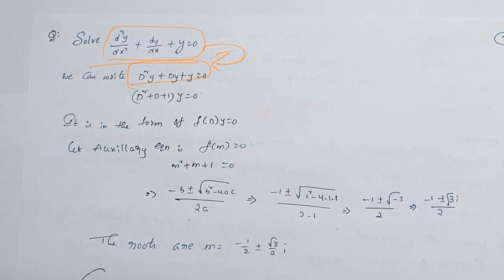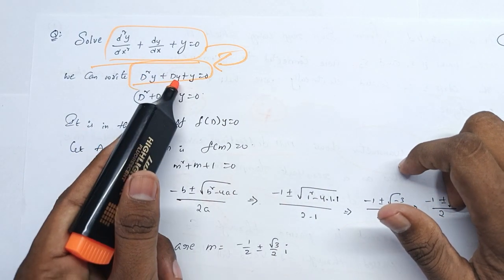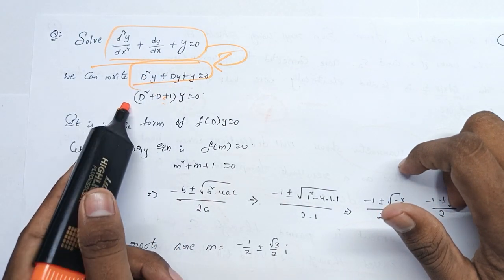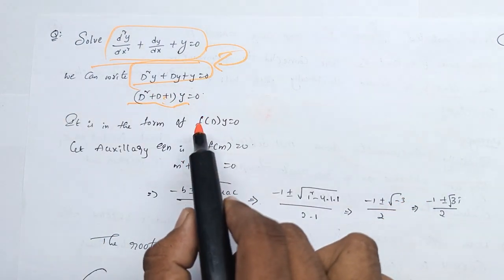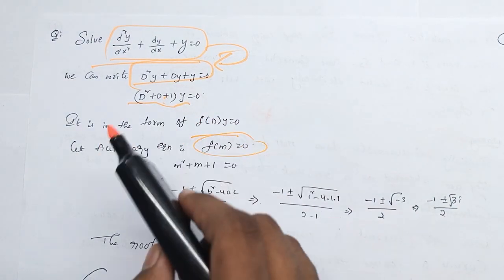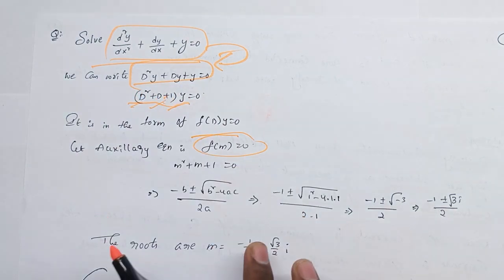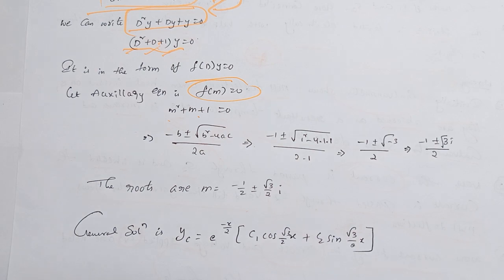So you can write d²y/dx² + dy/dx + y = 0. If you have the auxiliary equation, you have to find where f(m) is equal to 0. An auxiliary equation this is f(m) = 0, which is m² + m + 1 = 0. So if you want to write roots, you can use the quadratic formula.